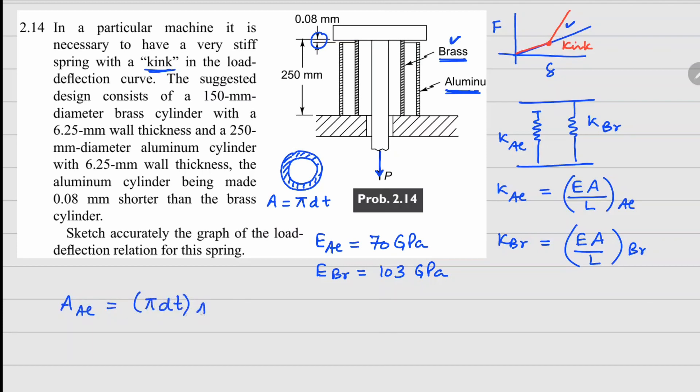So your area for aluminum is going to be pi dt for aluminum and similarly for brass you can write pi dt for brass. Now in terms of length, length for brass which is your original length is 250 mm, and for aluminum because there is a gap of 0.08 millimeters, so it's going to be 249.92 millimeter.